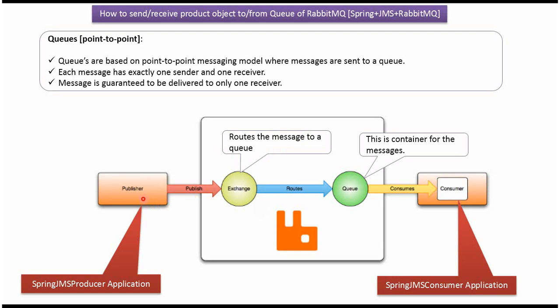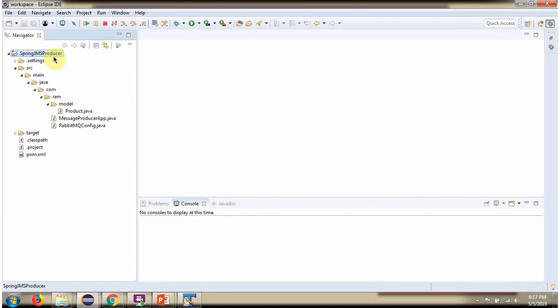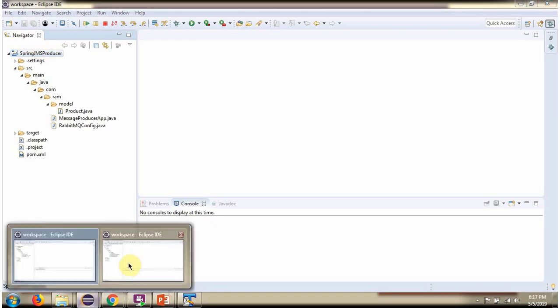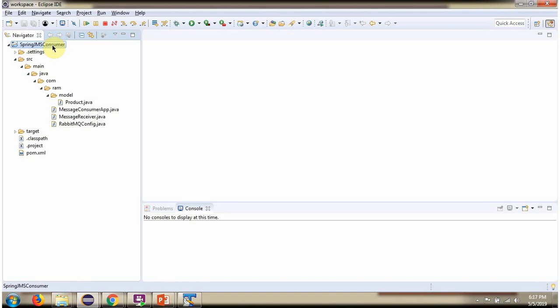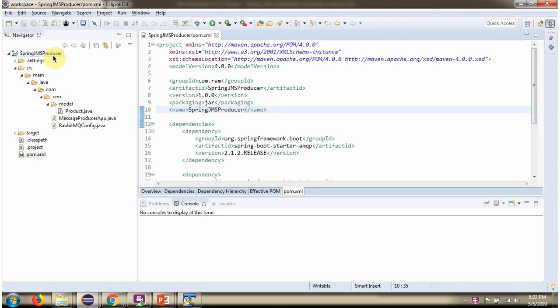To send a message to the queue, we have created a SpringJMS producer application. To consume a message from the queue, we have created a SpringJMS consumer application. Here you can see the SpringJMS producer application, and here you can see the SpringJMS consumer application. First, we will see the SpringJMS producer application.